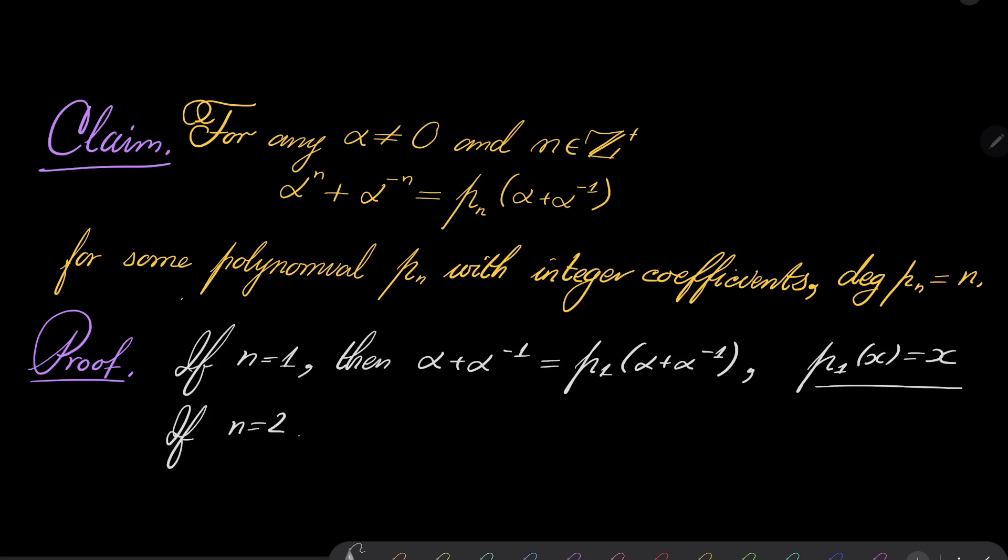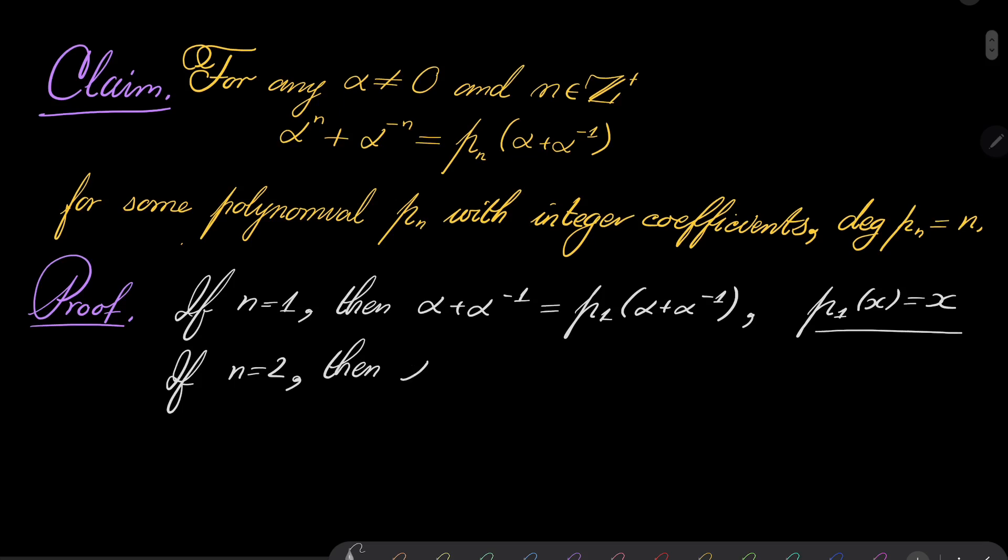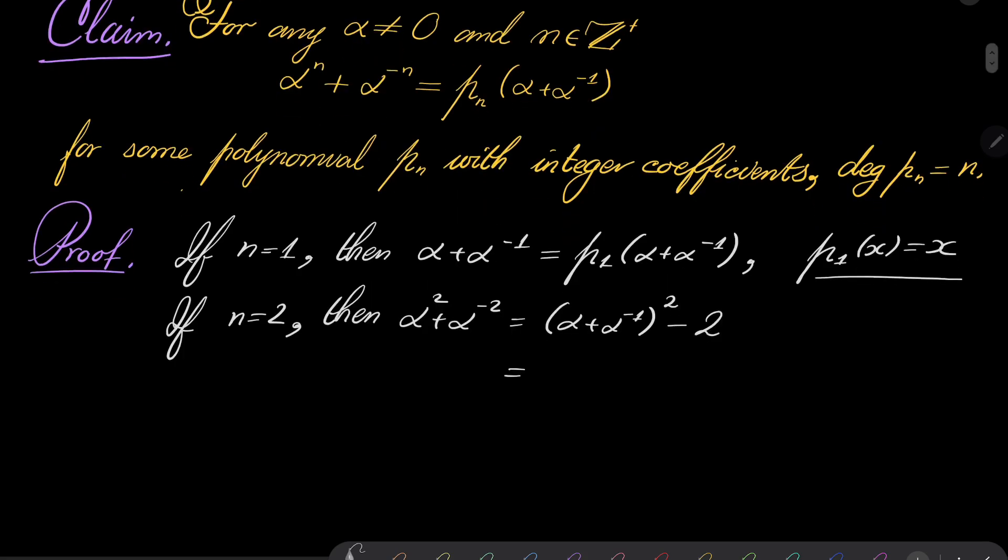Well, if n equals 2, then notice that we can do the following: α² + α^(-2) can be written as (α + α^(-1))² but we have to subtract 2 to be exact. And notice that here we have our polynomial. So p_2(x) is x² - 2. So it is quadratic. It has integer coefficients.